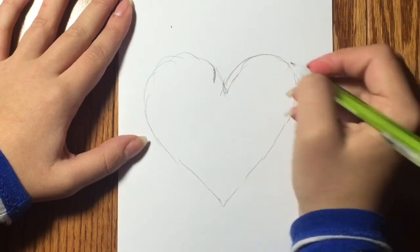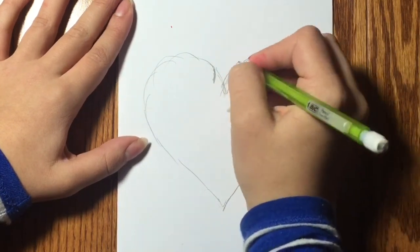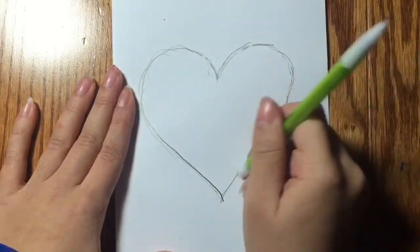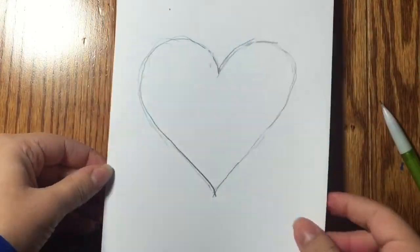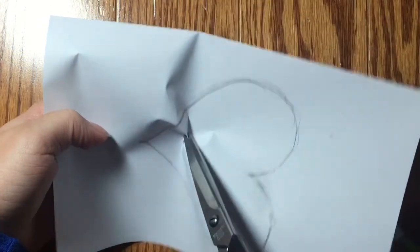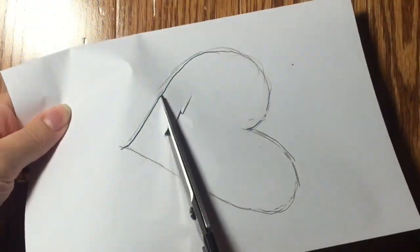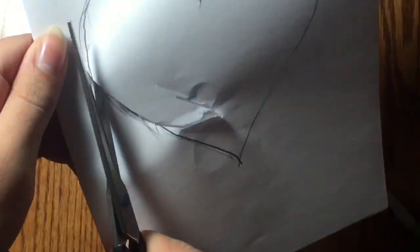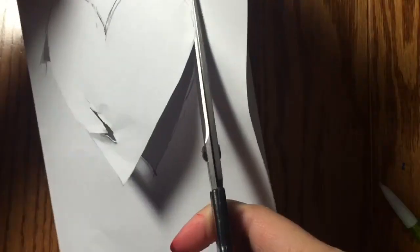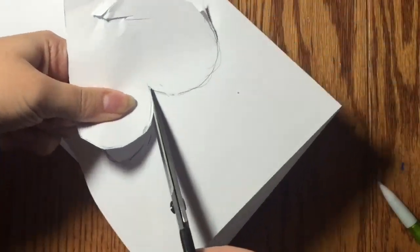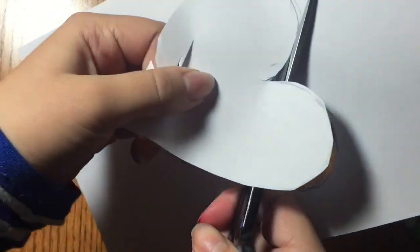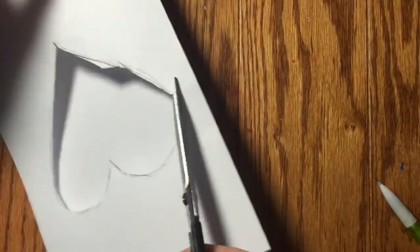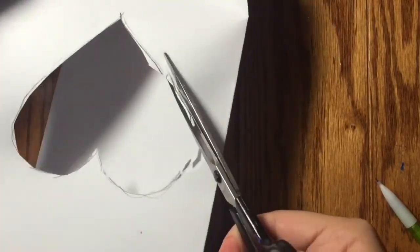In the middle of our card, we're going to draw a heart shape. Now we're going to cut that heart out. Make sure that when you're cutting, you only cut the first side of the paper. You don't cut both sides together. You can also trim the edges if you need to.